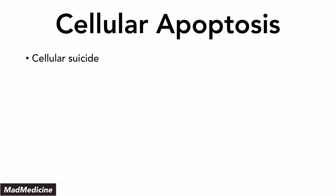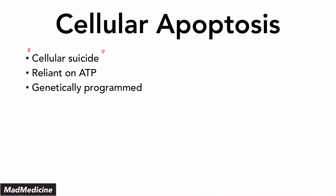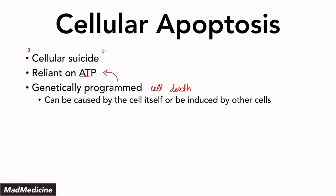Apoptosis is a type of cellular suicide, essentially. It is reliant on ATP because it is genetically programmed cell death. And because it is genetically programmed, you need ATP for proper functioning. It can be caused by the cell itself, or other cells can also cause apoptosis.